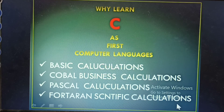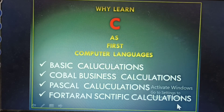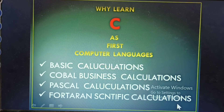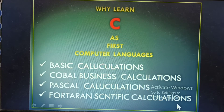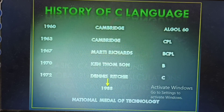FORTRAN is for scientific calculations. Scientific calculations are also supported in C language. These all are the languages before C. But C language is very useful for computer programming.